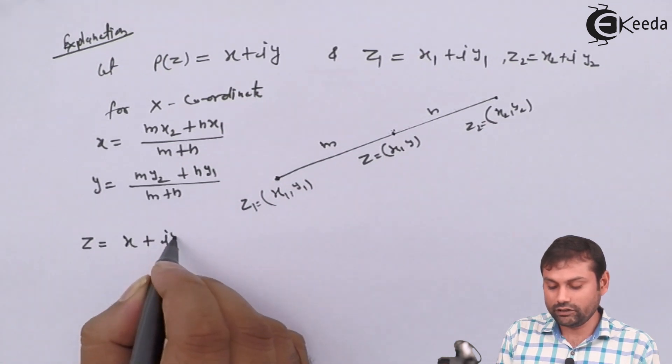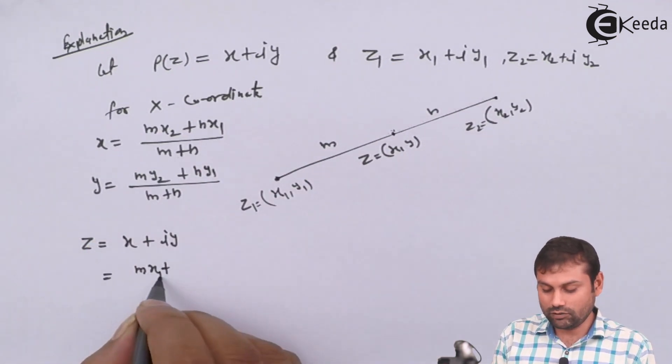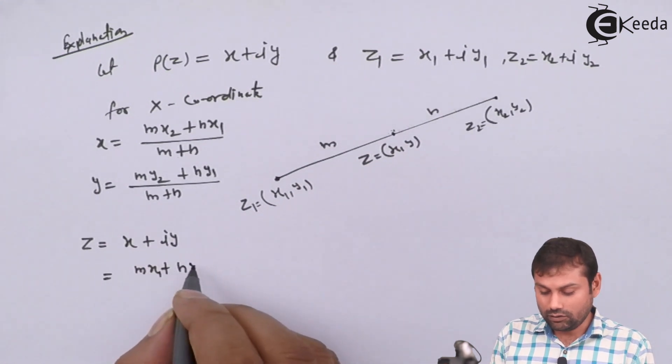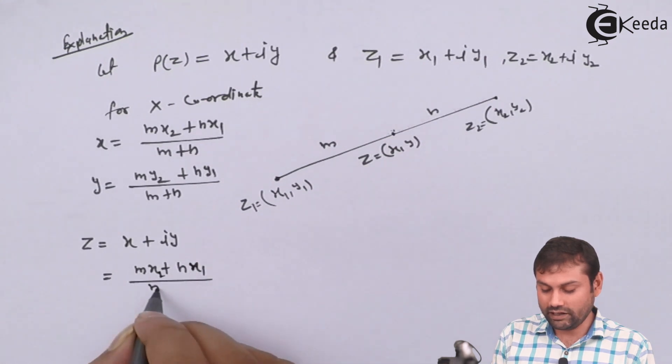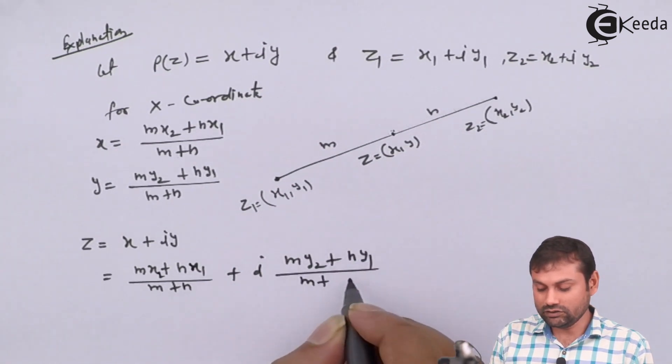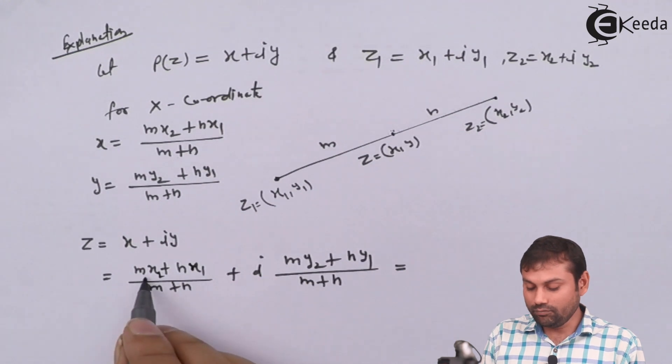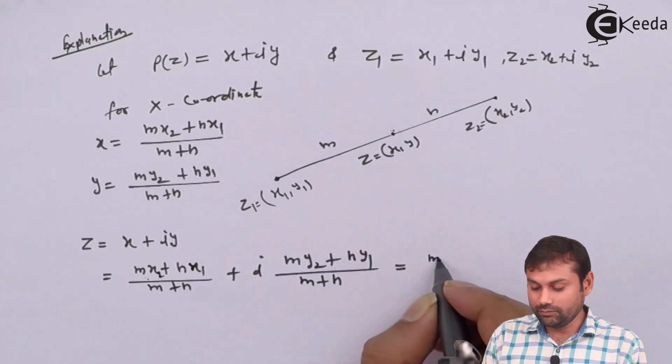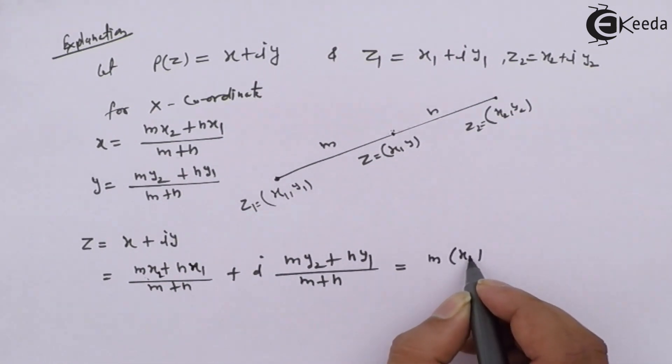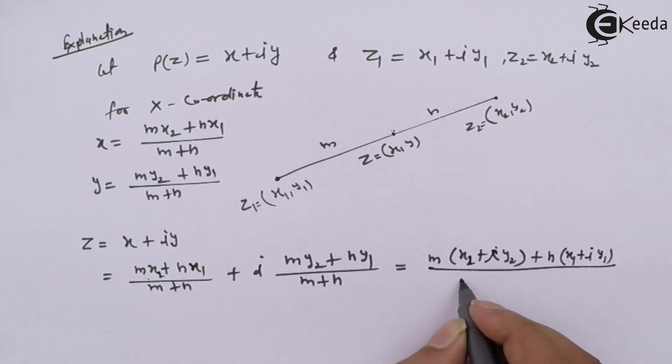z equals to X plus iY, we have already taken, so put the value of X and Y. So M X2 plus N X1 upon M plus N plus i times M Y2 plus N Y1 upon M plus N. From here, M X2 plus iY2, similarly from here N X1 plus iY1 upon M plus N.